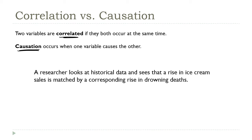Now, to see the difference, take a look at this scenario. A researcher looks back at historical data, and he sees that ice cream sales and drowning deaths both rise and fall at the same time every year. Now, this is exactly what we mean by correlation.